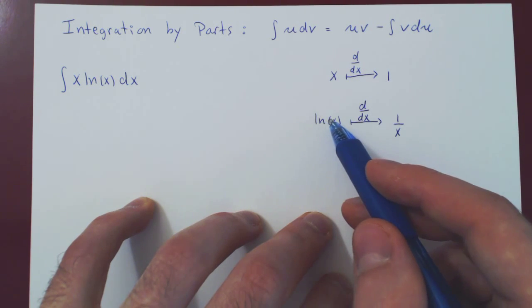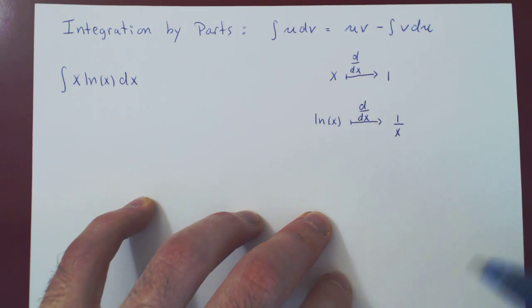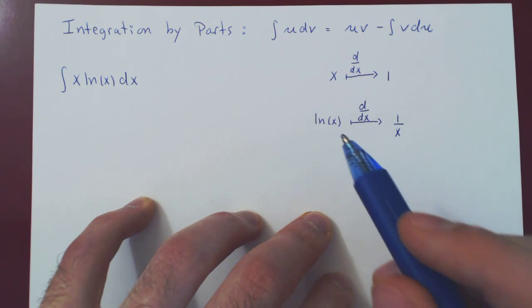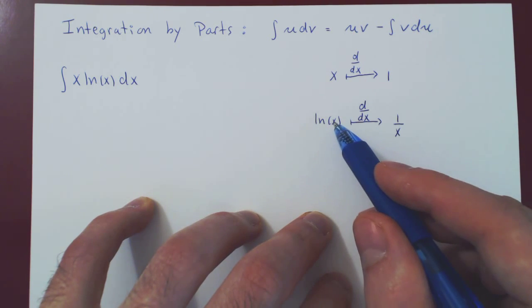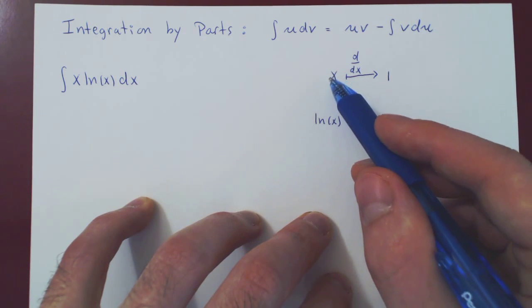Or going from a complicated logarithmic function to a simple function 1 over x? As far as a simplification is, it's much better to go from a logarithmic function to the simple function 1 over x than it is to go from x to 1.